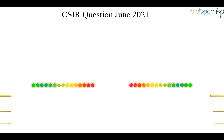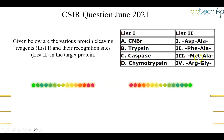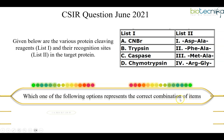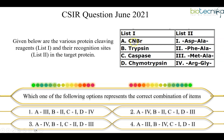The first question is from the CSIR June 2021 exam — it is a match-the-following type. List one gives various protein cleaving reagents and List two gives the recognition sites in the target protein. All you have to do is match what type of sequence each reagent is going to cleave. If you know CNBr, trypsin, caspase, and chymotrypsin, they always have a specific amino acid where they cleave. For example, CNBr will always cleave at the C-terminal of methionine.